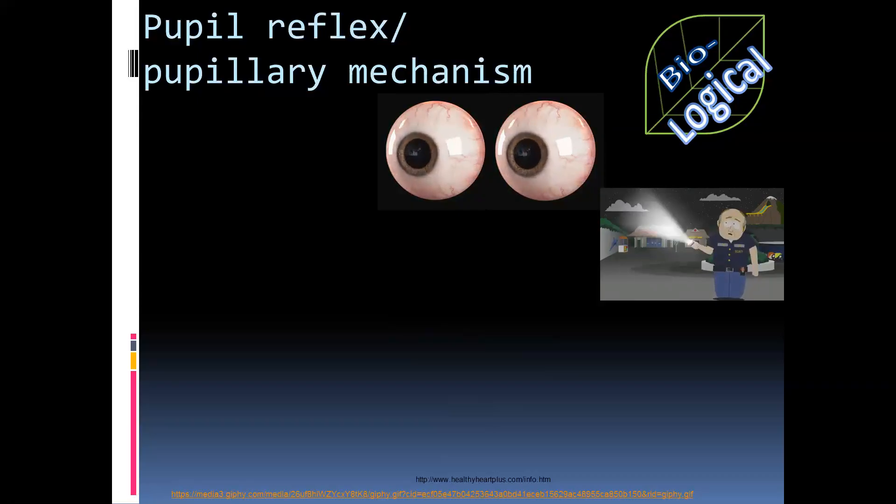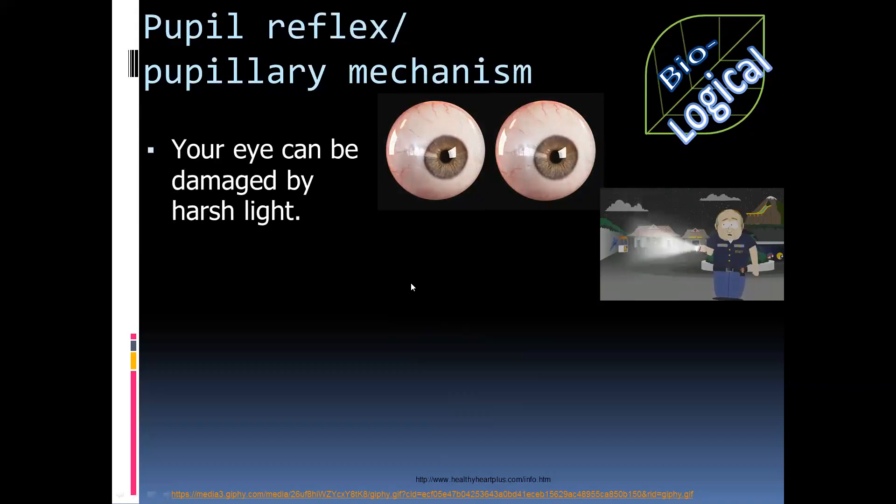The reason being is that the eye can be damaged by harsh light. So by constricting the pupil, less light will enter the eye and thus it will protect the cells of the eye.